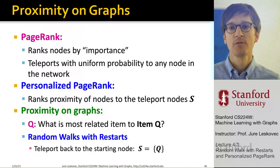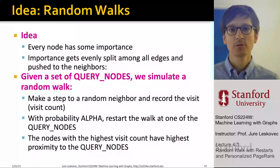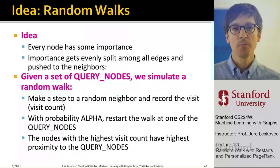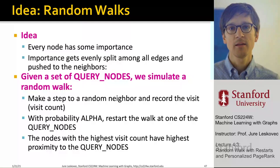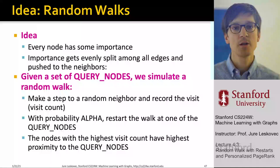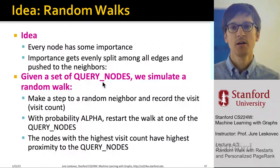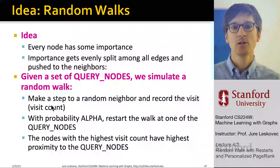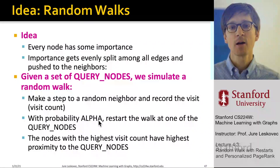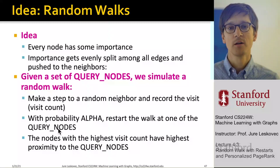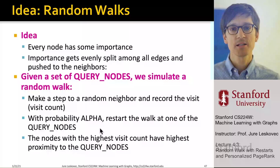In random walk with restarts, every node has some importance that gets evenly split among all edges and pushed to the neighbors — the same as in the original PageRank formulation. We define a set of query nodes S and physically simulate the random walk: make a step to a random neighbor, record the visit to that neighbor by increasing its visit count, and with some probability alpha restart the walk by jumping back to any of the query nodes.